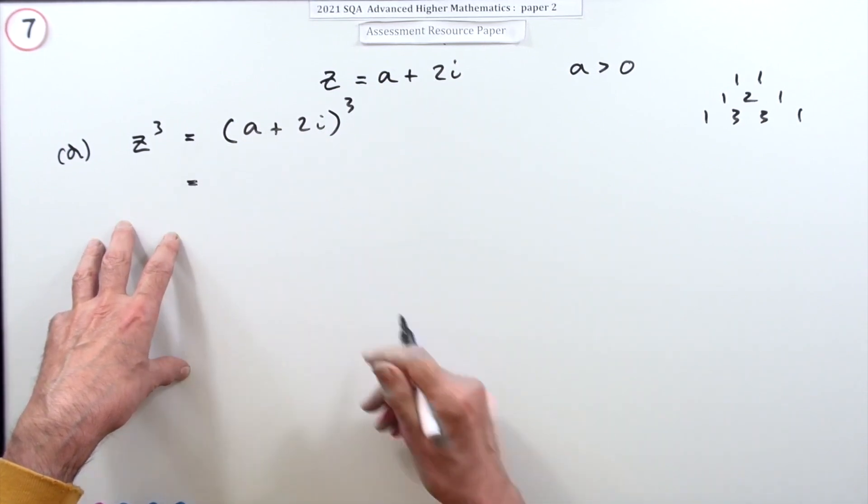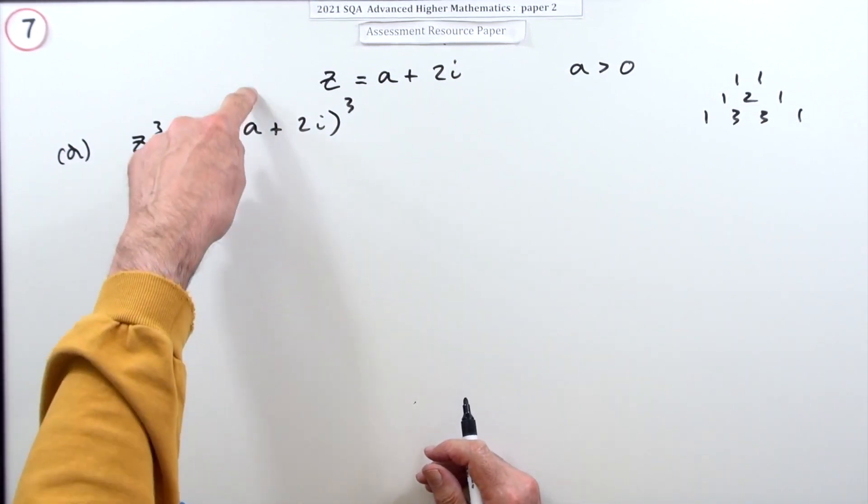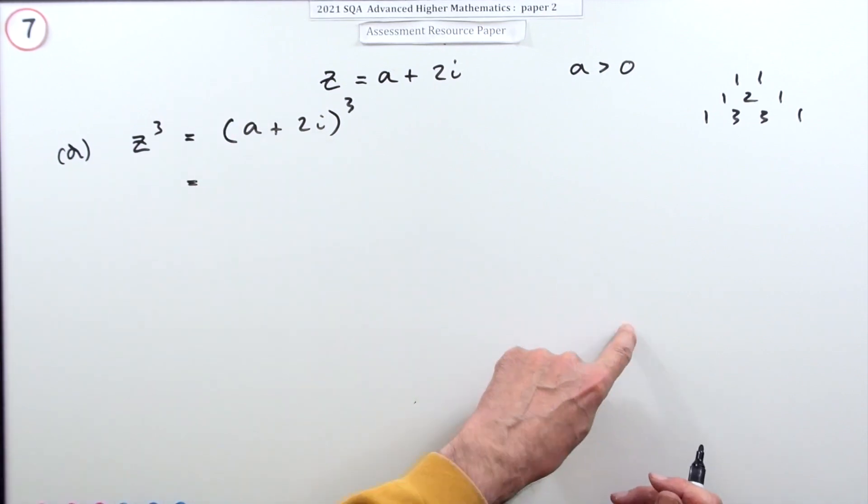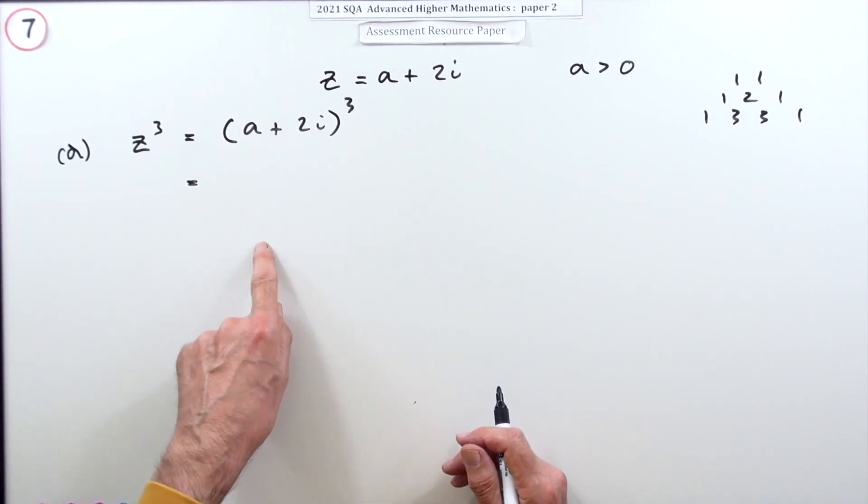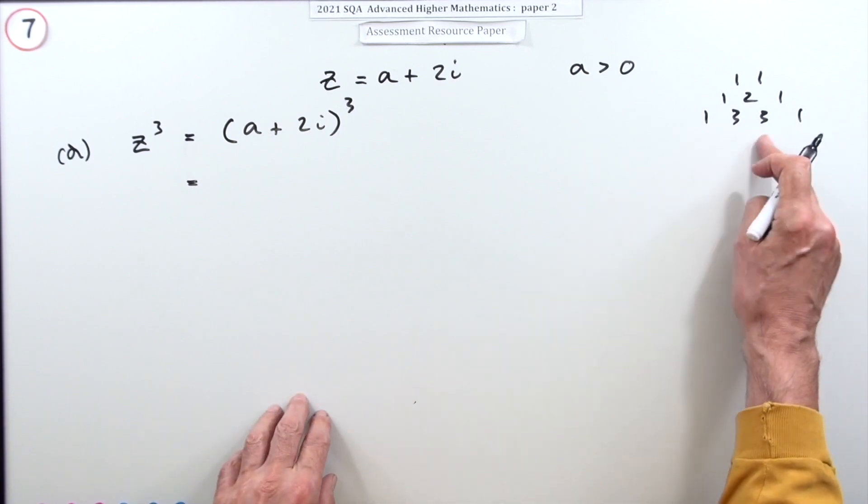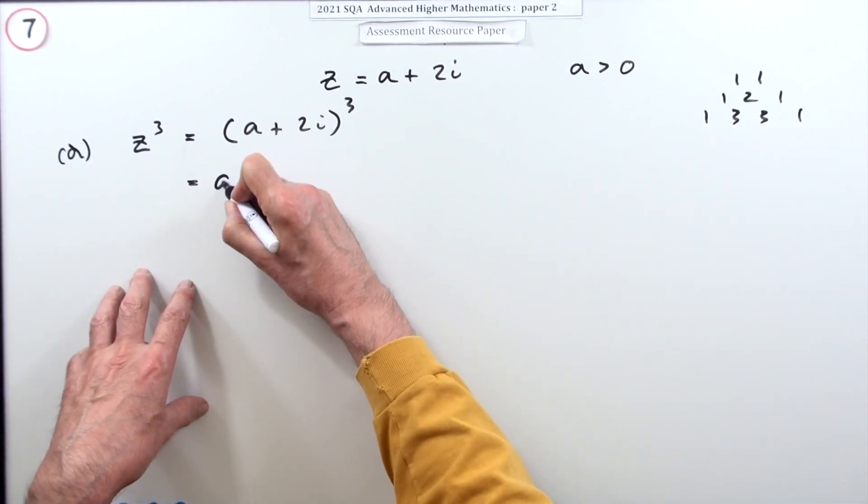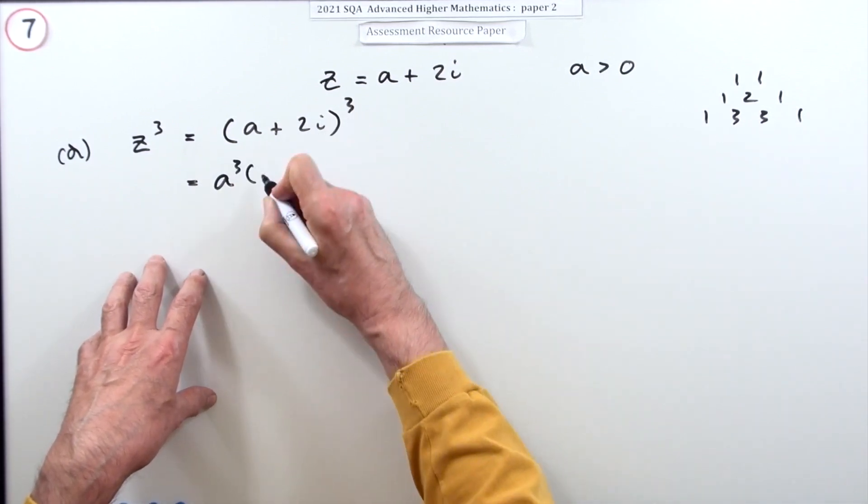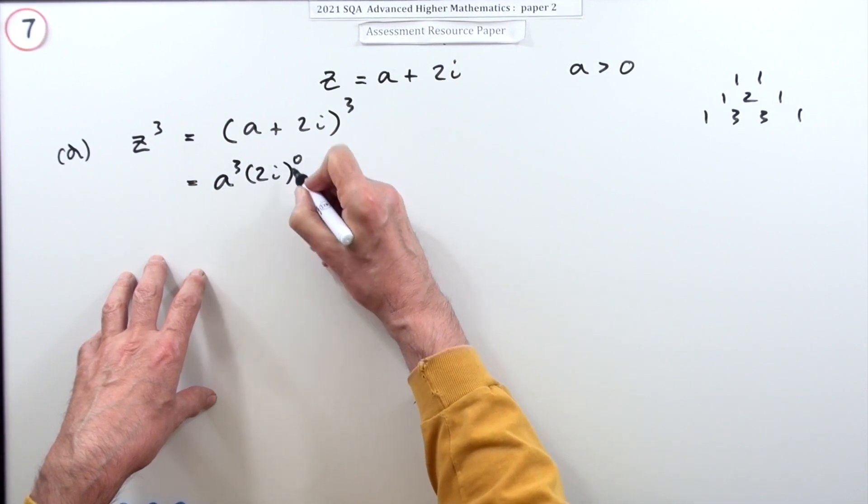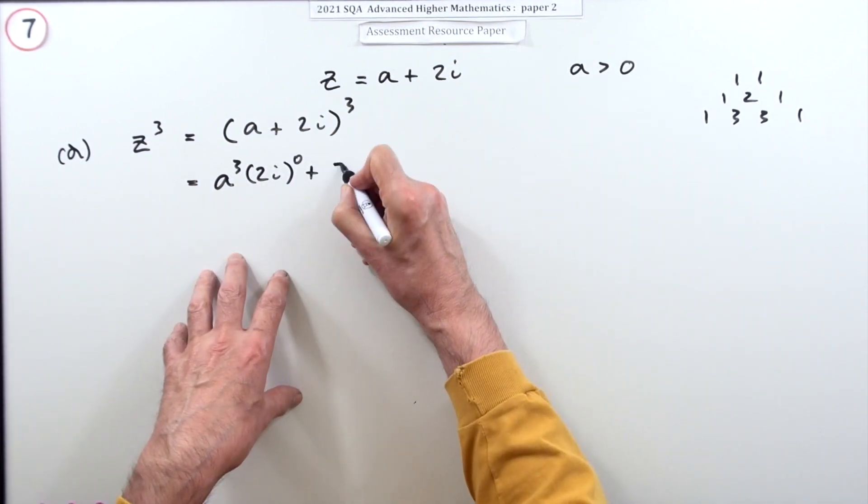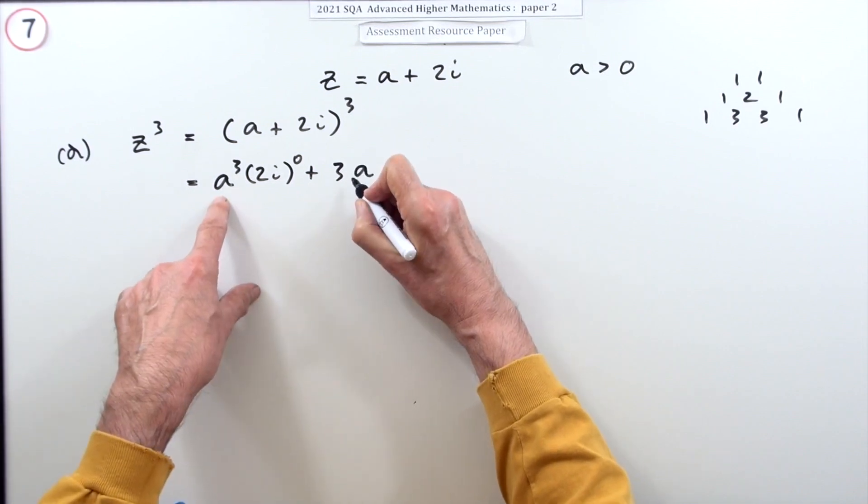Start with this one with a high power and work down, and start with this one at power zero and build up, given the coefficients. So start off as a to the power three, next three times a squared, then that goes down to two.